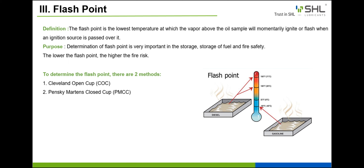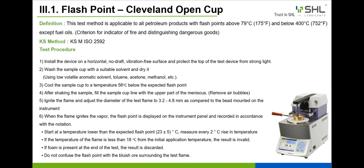To determine the flashpoint, there are two methods: Cleveland Open Cup (COC) and Pensky-Martens Closed Cup (PMCC). For a given type of oil, the COC flashpoint is always higher than the PMCC flashpoint. The COC test method is applicable to all petroleum products with flashpoints above 79°C (175°F) and below 400°C (752°F), except fuel oils. It is used as a criterion for indicating fire risk and distinguishing dangerous goods. KS method: KSM ISO 2592.